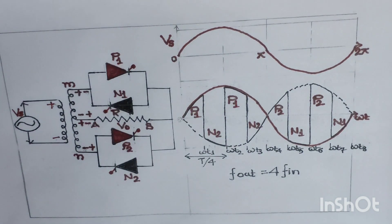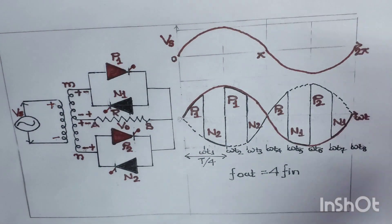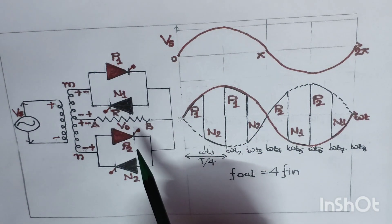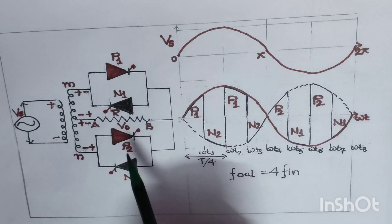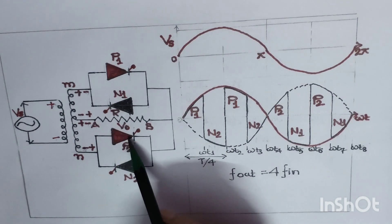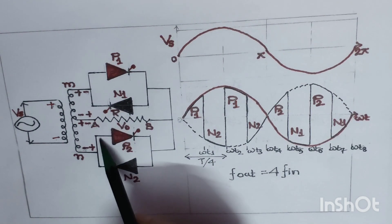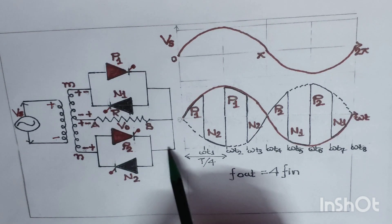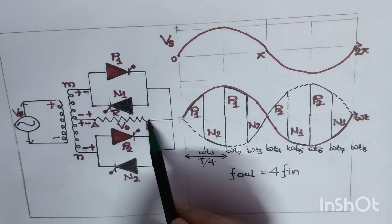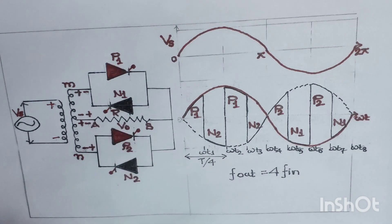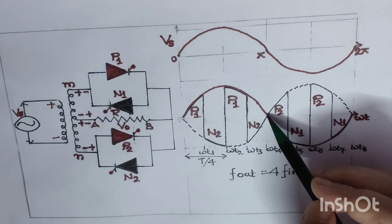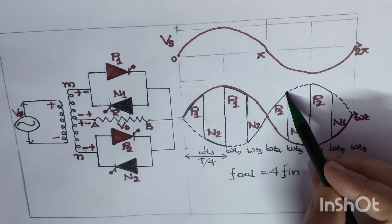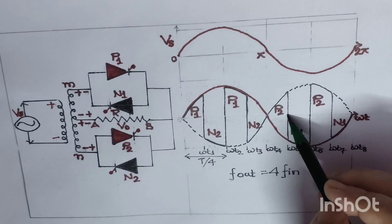For the negative half cycle of the supply, since this terminal is positive, we provide a trigger pulse to thyristor P2. Supply current from the positive terminal flows through thyristor P2, comes here, goes towards point B, and from B to A through resistance R back to the negative. At angle ωt4, voltage polarity is traced positively and continues until the point ωt5.